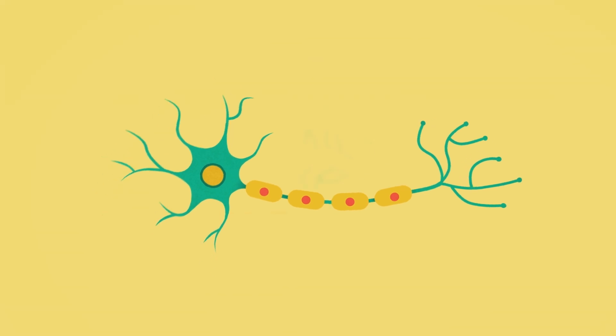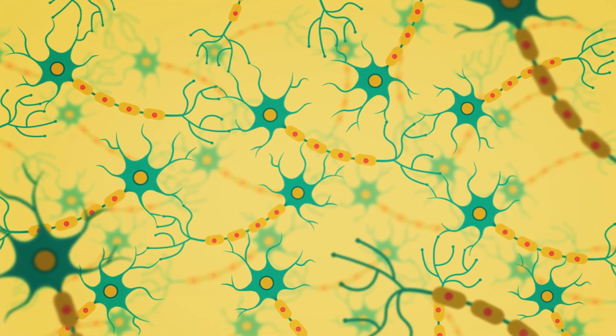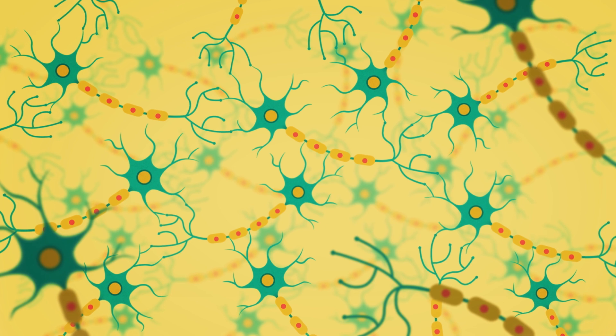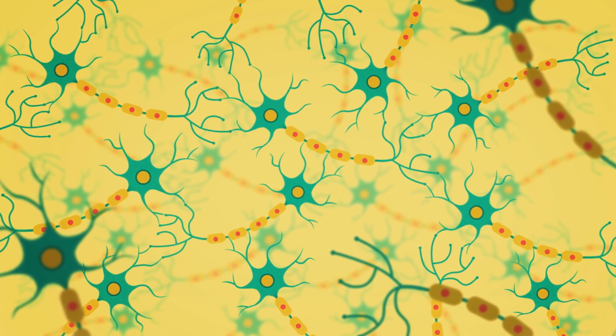These projections form many connections with one another, creating an intricate network between cells. The connections between nerve cells occur at junctions called synapses.